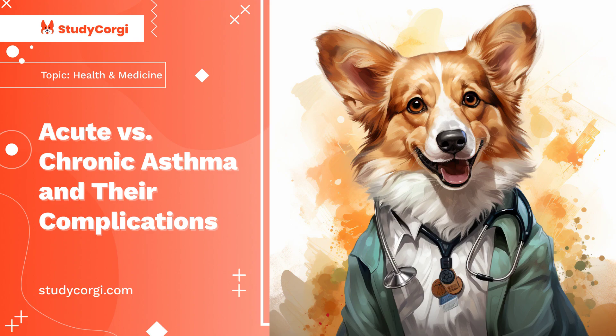The symptoms of these conditions occur in episodes, which can be subdued through proper medication. However, the symptoms may reappear as the efficacy of the medications used wears off and one is re-exposed to the triggers of the condition. Given the close relationship between the two conditions, healthcare practitioners should be in a position to differentiate them for improved care outcomes. This paper compares and contrasts acute asthma and chronic asthma together with highlighting their pathophysiology, diagnosis, and treatment.